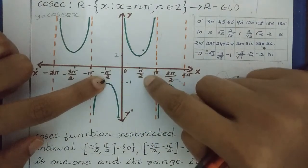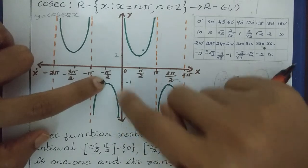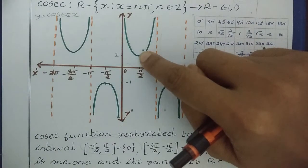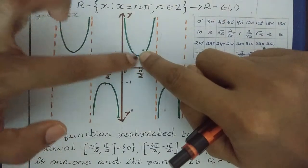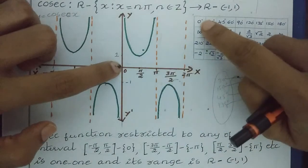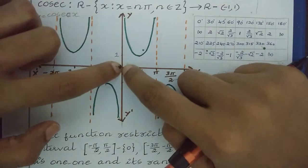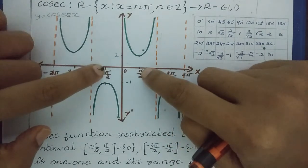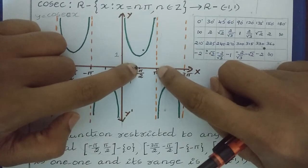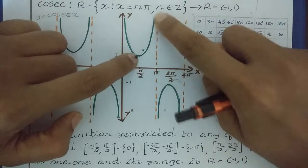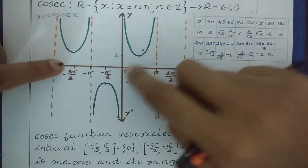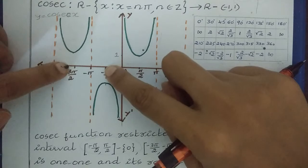Then which interval can we take? Let us take the interval minus π/2 to π/2. At this interval, the values are going to the negative side on one part and to the positive side on the other part. That means the function is one-one — for every image we have a unique pre-image. By excluding 0, since cosec 0 is infinity, at this interval the Cosec Function is one-one. Similarly, for the interval π/2 to 3π/2 — excluding π, since cosec π is infinity — here the positive values and negative values are separated, so every image has a unique pre-image. At this interval also it is one-one.